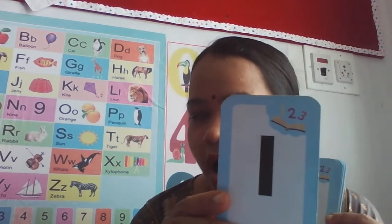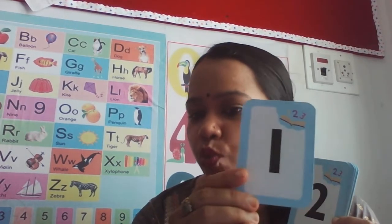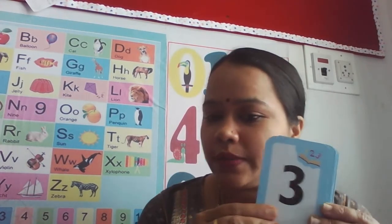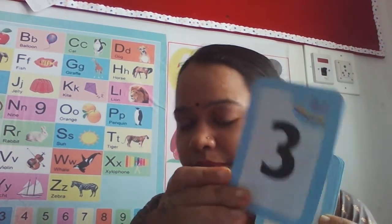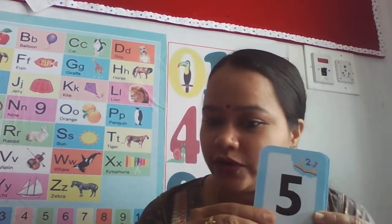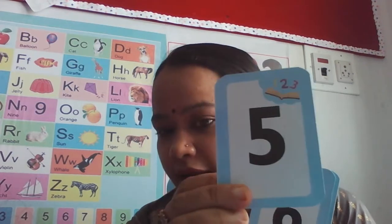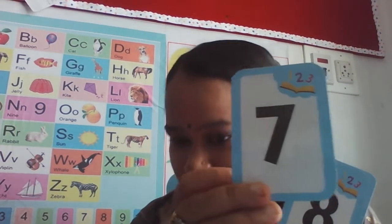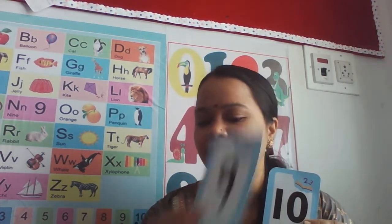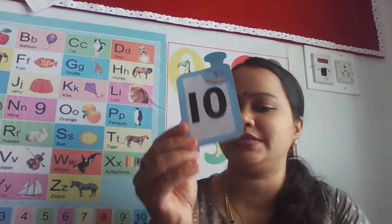The first number is one. One, after number is two. Two, after number is three. Three, after number is four. Four, after number is five. Five, after number is six. Six, after number is seven. Seven, after number is eight. Eight, after number is nine. Nine, after number is ten.